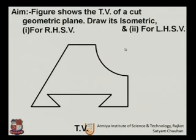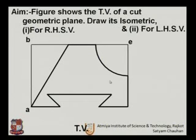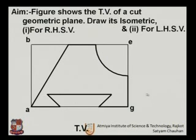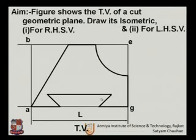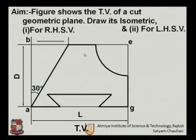Now we will see the top view of the same cut geometric plane — left-hand side view and right-hand side view. To draw the top view for this geometric plane, we complete the plane with known length L, known depth D, and the angle of 30 degrees. We also need to measure the length from the relevant reference point to locate the cut correctly.